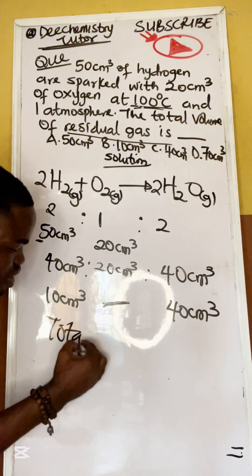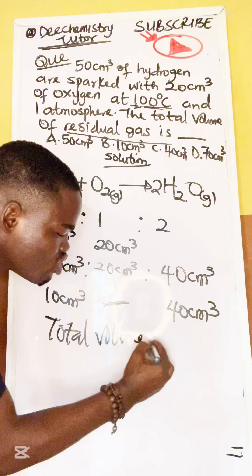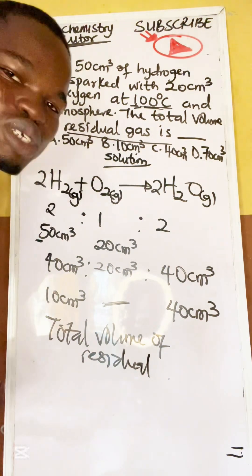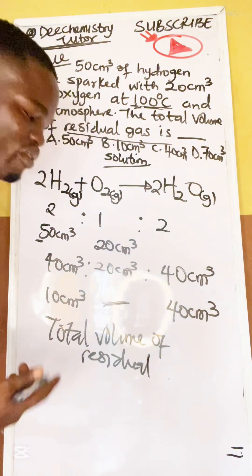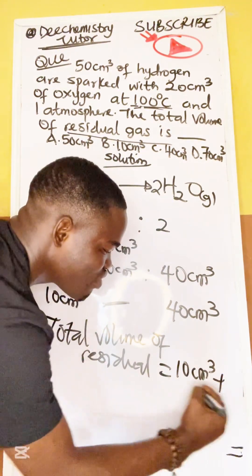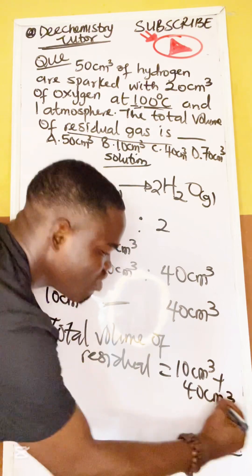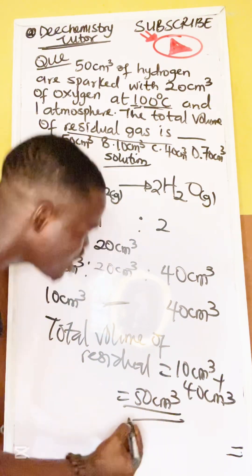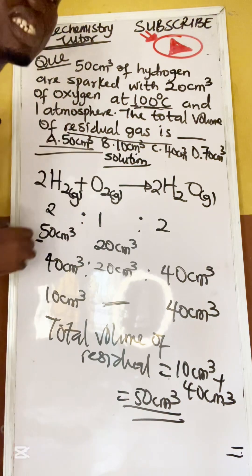So eventually, the total volume, very simple question, of residual gas. Residual gas means what is left. What is the total volume of residual gas? It's 10 cm³ plus 40 cm³. Very easy. 50 cm³. You don't need to cram. The answer is 50 cm³.